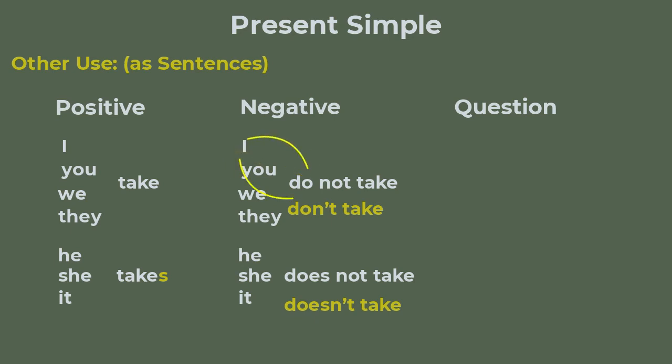For the question now the helping word has to be before the subject and the sentence ends up with a question mark. Then we're gonna have do I take, do you take, do we take or do they take and furthermore does he take, does she take or does it take.